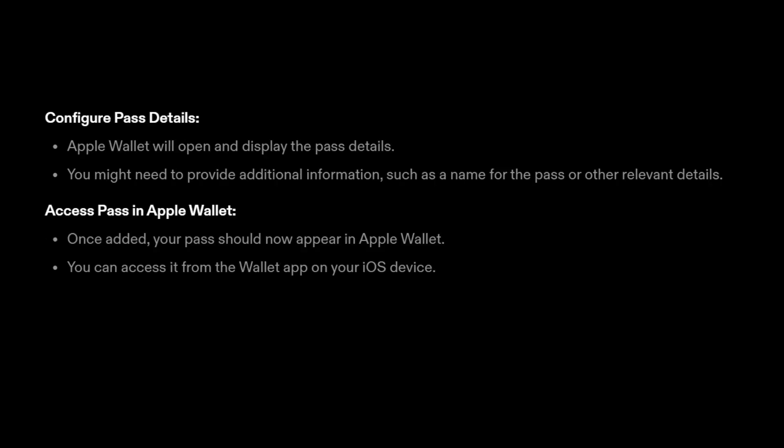Configure pass details. Apple Wallet will open and display the pass details. You might need to provide additional information, such as a name for the pass or other relevant details. Once added, your pass should now appear in Apple Wallet, and you can access it from the Wallet app on your iOS device.